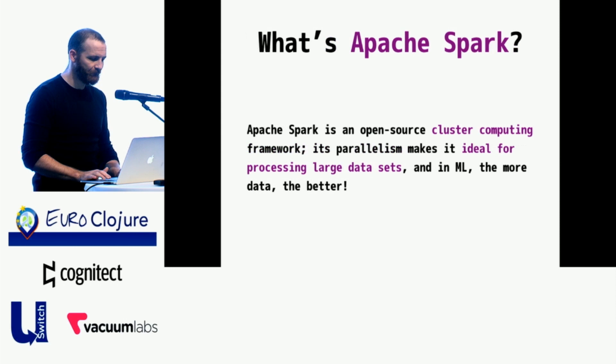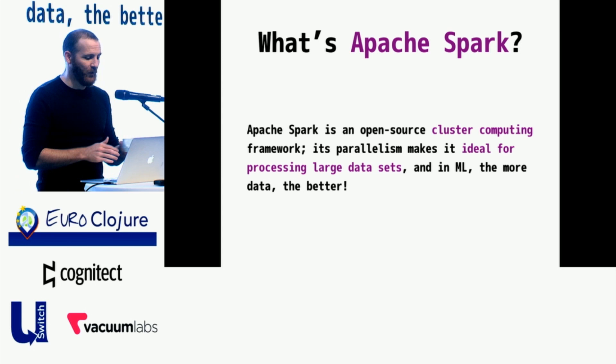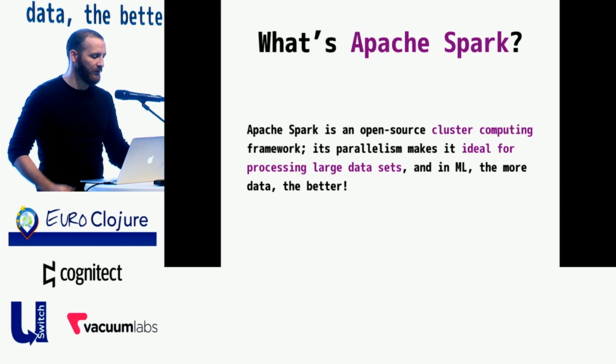So Apache Spark is an open source cluster computing framework. The parallelism that Spark affords us is sort of ideal for processing large data sets. In several talks so far, we've talked about the virtues of parallelization and when things are embarrassingly parallel. In machine learning, the more data, the better. So at a certain point, running computations in parallel becomes not just nice but crucial.